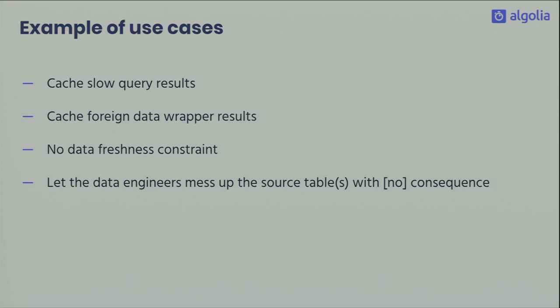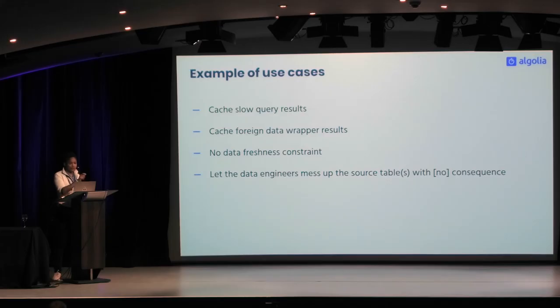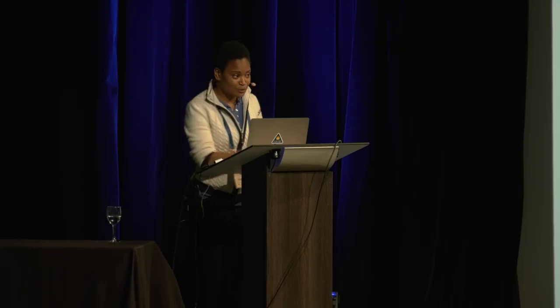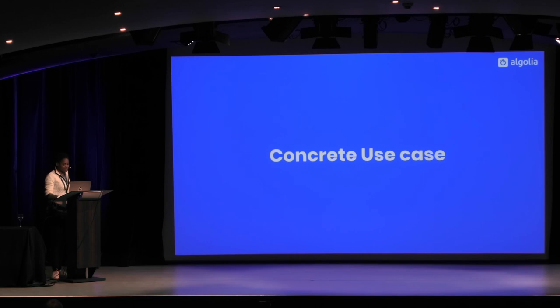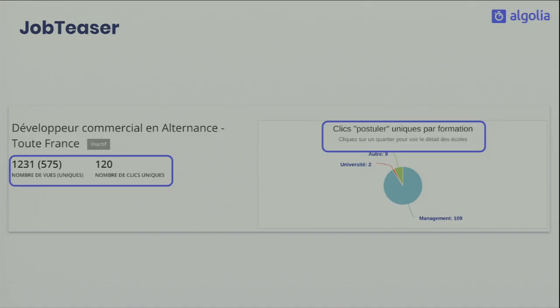For concrete use cases: caching. When you have a slow query, it can be super useful to cache the results, especially if you don't have real-time constraints. You can also cache foreign data wrapper results in PostgreSQL, and you can let an engineer like me mess up the source table via a cowboy deployment without the end user seeing consequences for a while.